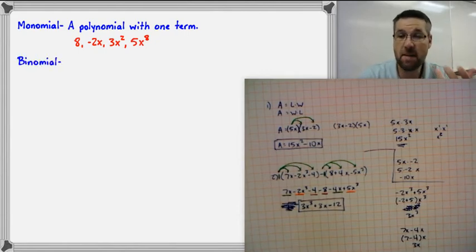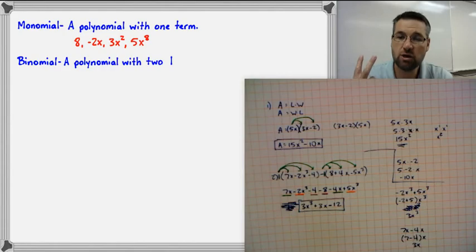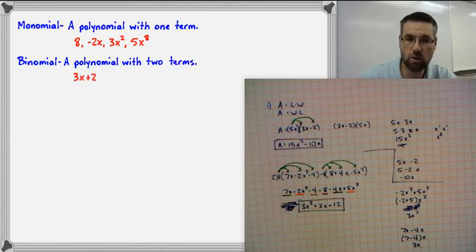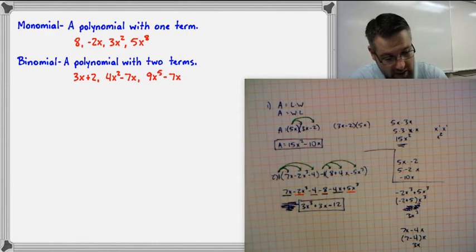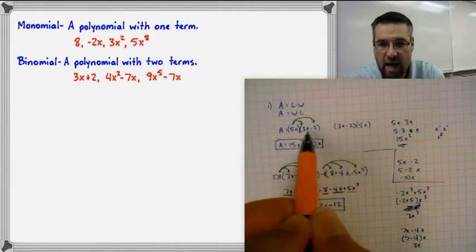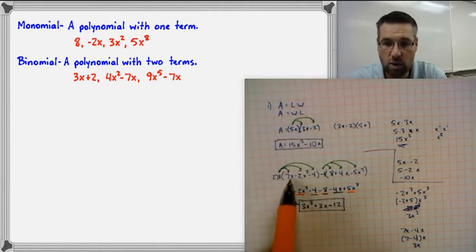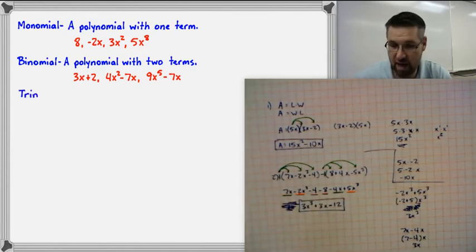The next term is a binomial — 'bi' meaning two. A binomial is a polynomial with two terms. Examples would be 3x plus 2, or 4x squared minus 7x, or 9x to the 5th minus 7x. From our earlier examples, 5x is a monomial and 3x minus 2 is a binomial because it has two terms. And 7x minus 2x cubed minus 4 is called a trinomial because there are three terms.